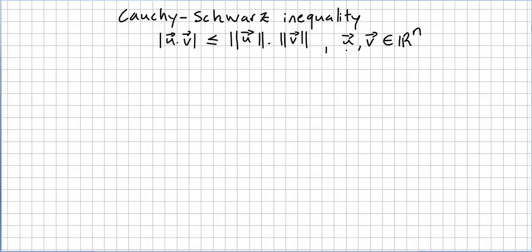If we have vectors u and v in the vector space ℝⁿ, the inner product — the norm of the inner product of u and v — is less than or equal to the norm of u times the norm of v. This is very important because you need this for metric spaces, for the beginning of mathematical analysis, and all that sort of thing. Let us now prove this Cauchy-Schwarz inequality.